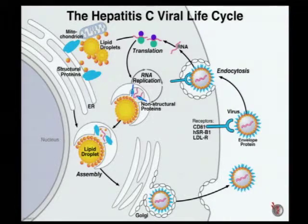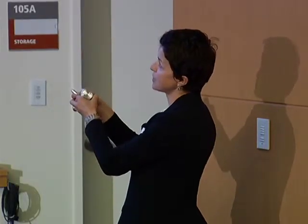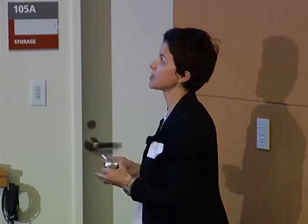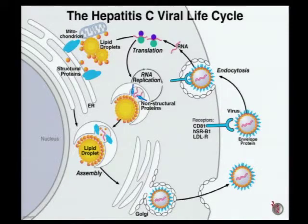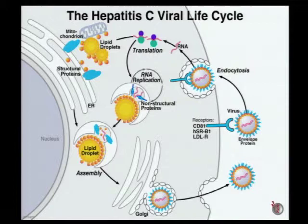The virus enters the cell — the hepatocytes — via receptor-mediated endocytosis, and the list of receptors is growing. After translation of a single polyprotein, which is processed into structural and non-structural proteins, the non-structural proteins form an RNA replication complex with the RNA-dependent RNA polymerase at its center. A portion of these complexes is recruited to the vicinity of lipid droplets to provide genomic RNA for encapsulation into progeny virions, which are assembled at ER membranes close to lipid droplets and exit the cells using the lipoprotein secretion pathway.